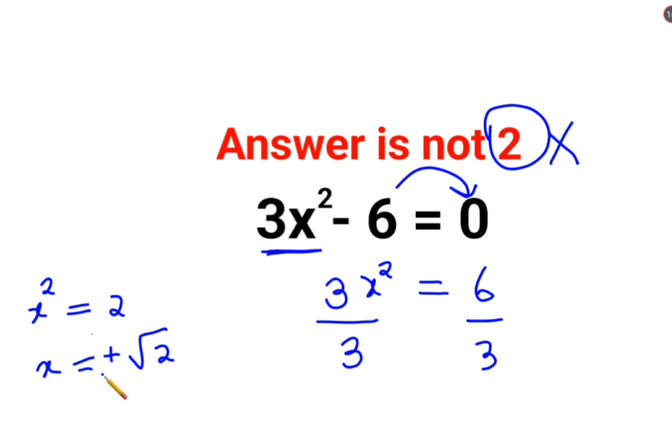And since it is a variable involved, the value will always be plus minus in case of a root. So basically, here we can say the value of x is either root 2, positive root 2 or negative root 2. I hope this is very clear to everyone.